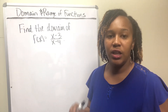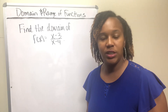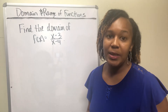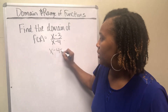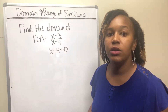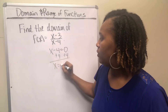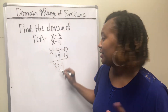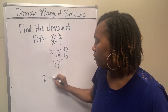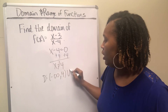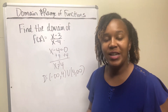This function is in the second category of fractions, so the denominator cannot be zero. Take the denominator, set it equal to zero, and solve for x. Add 4 to both sides and you get x = 4. That means x cannot be 4. So your domain will be all real numbers except 4, written as negative infinity to 4, union 4 to infinity. Hopefully that is what you got.